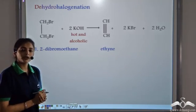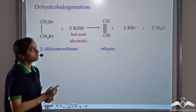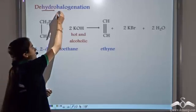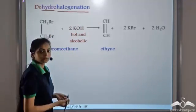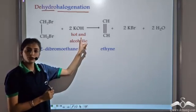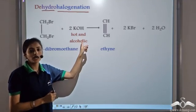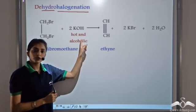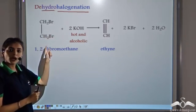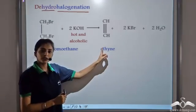Another way to prepare ethyne is by using the dehydrohalogenation method. From the name itself, we see it is the removal of hydrogen and the removal of halogen. As we had seen in case of alkenes, we use a very special reagent known as potassium hydroxide in the hot and alcoholic form. When we use KOH, it is made to react with 1,2-dibromoethane. When it reacts with this, it forms ethyne.